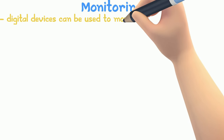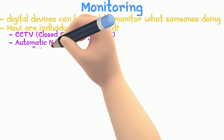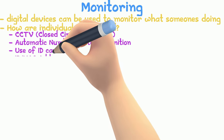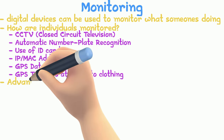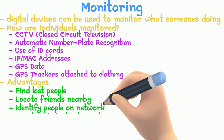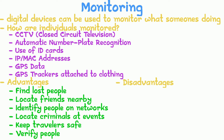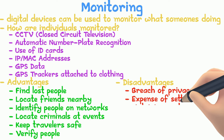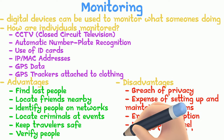Digital devices can be used to monitor what someone is doing. Here's how individuals' movements are monitored: CCTV (closed circuit television), automatic number plate recognition, use of ID cards, IP or MAC addresses, GPS data, or GPS trackers attached to clothing. Advantages include finding lost people, locating nearby friends, identifying people on networks, locating criminals at events, keeping travelers safe, and verifying people. Disadvantages include breach of privacy, expense of setting up and maintaining systems, energy consumption, and making people feel uncomfortable or untrusted.